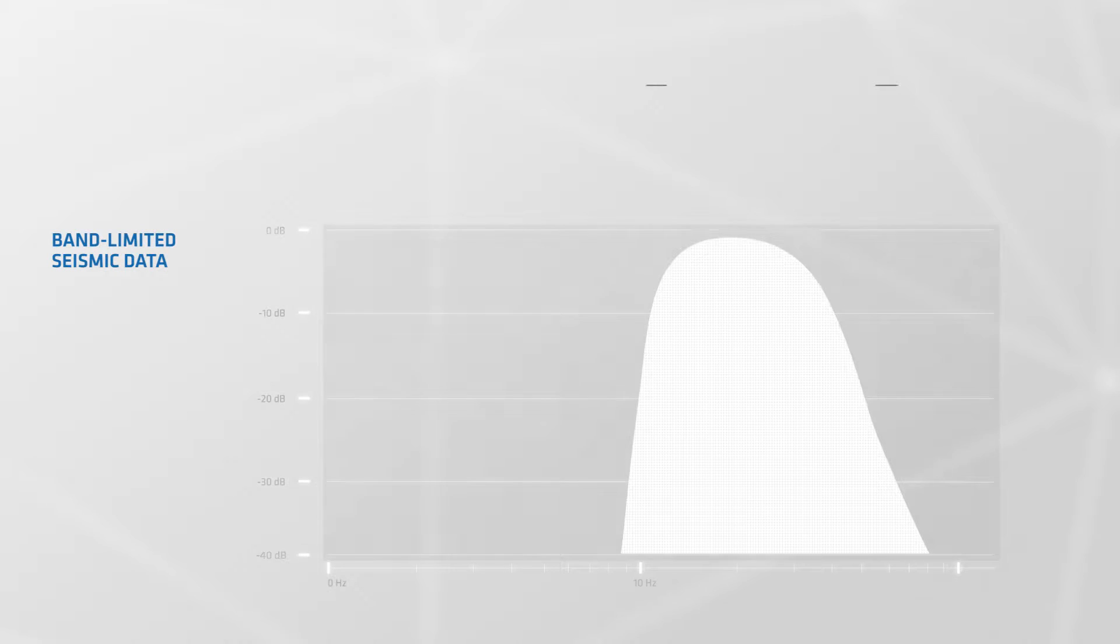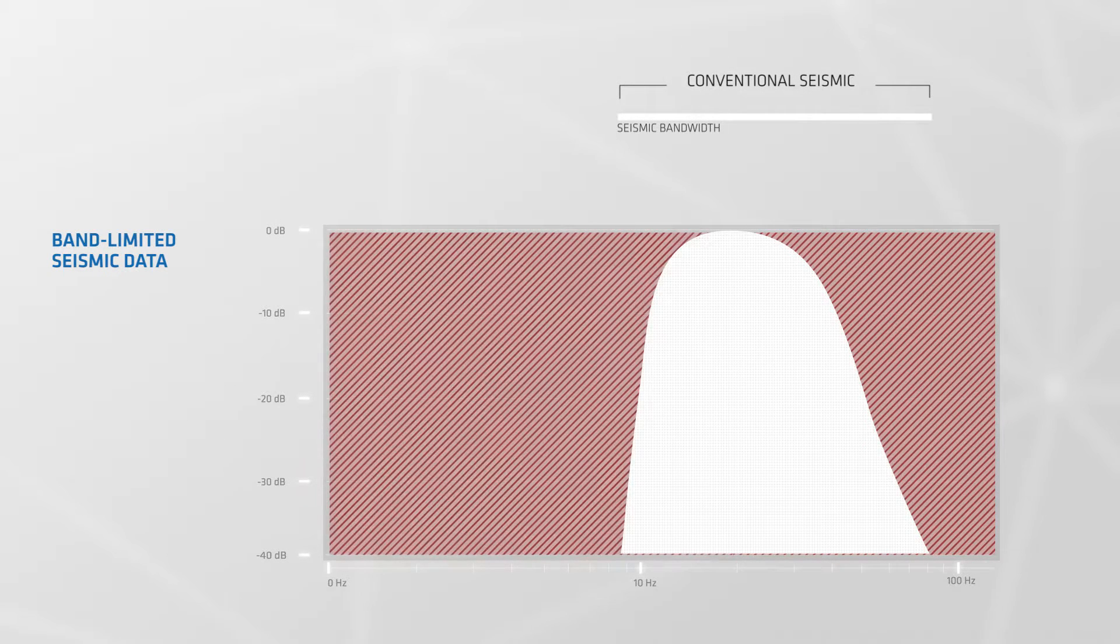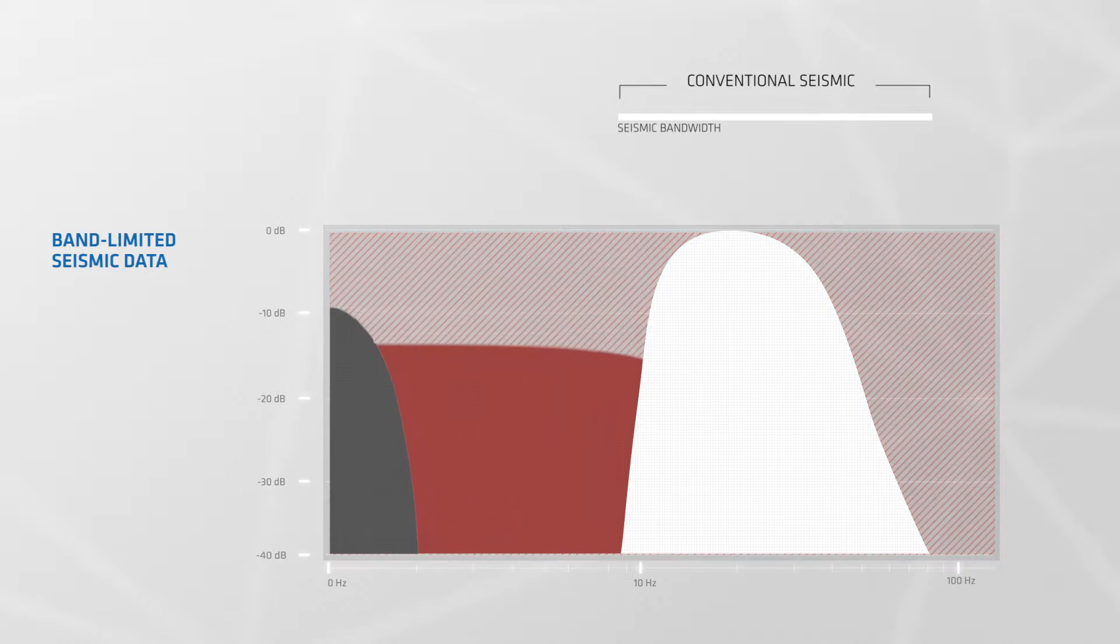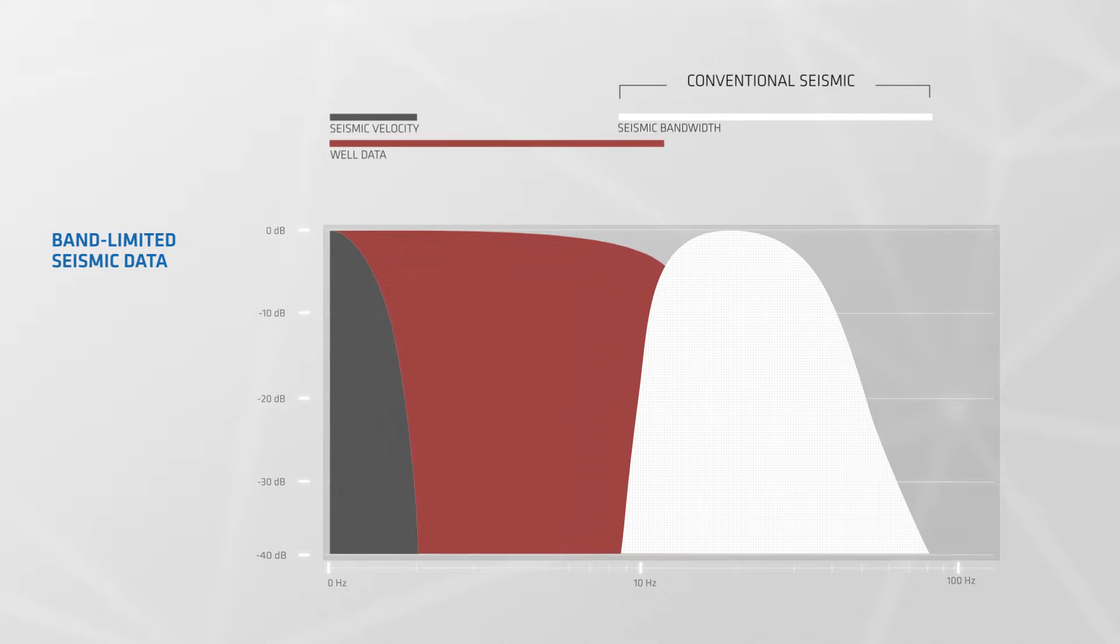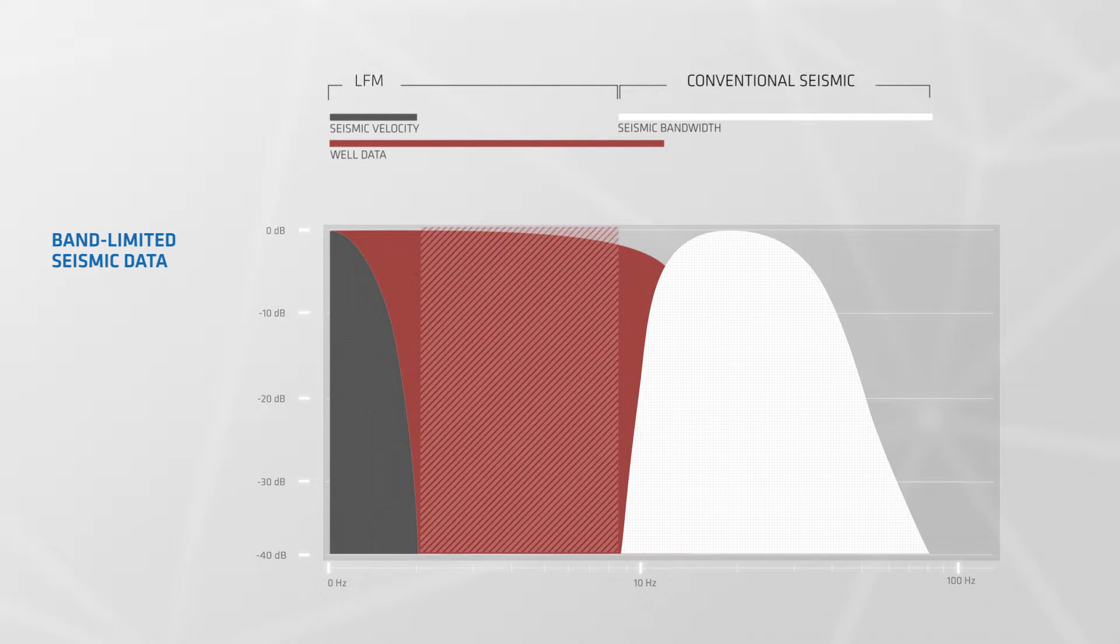Using conventional band-limited seismic with a lack of information at the high and low ends of the amplitude spectrum leads to great uncertainty in deriving rock property estimates. A low-frequency model has to be built using sparse well information to substitute the missing low-frequency information.